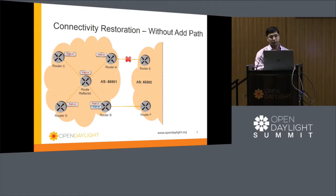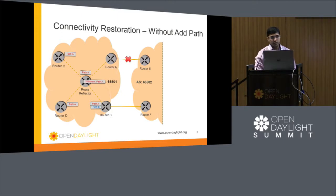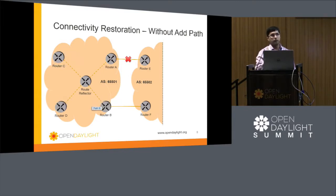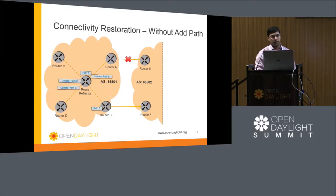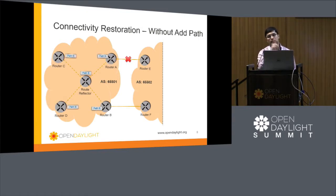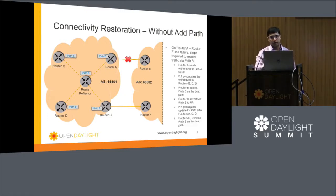Without AddPath, Router B determines path A is better and does not advertise path B. So in the steady state, only Router B in AS1 knows about path B, while all others only know the best path. When a failure occurs between Router A and Router E, Router A generates a withdraw message and sends it to the route reflector, which reflects it. Router B then redoes the path computation, determines path B is now the best path, advertises it, and only then do Routers C and D switch to path B. This takes quite a few steps before the backup path is used.